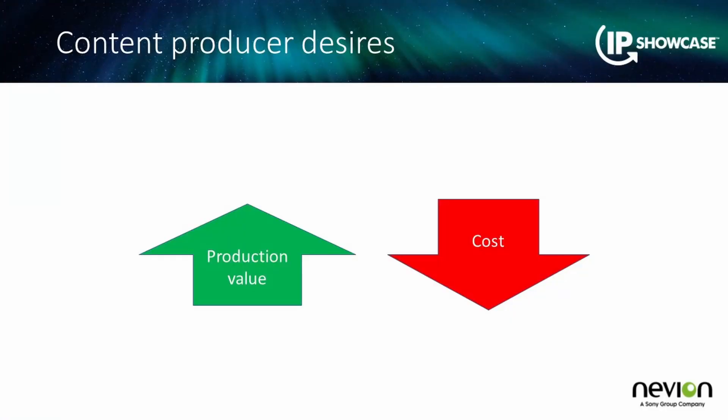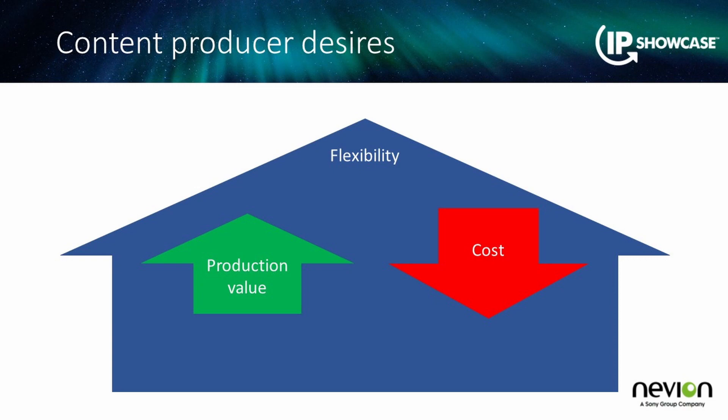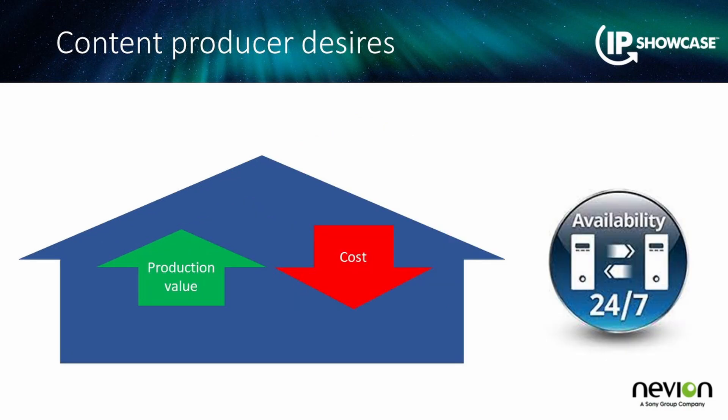A few overall thoughts about what broadcasters and content producers are actually looking to achieve. There are two fundamentals I see all the time: one is an attempt to increase production value, and the other — which is always there — is an attempt to decrease the cost. Along with those is flexibility, and high availability is incredibly important for broadcast, which plays into some of the things we'll think about in terms of resilience.